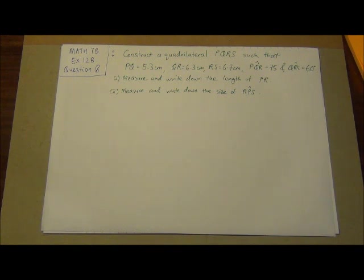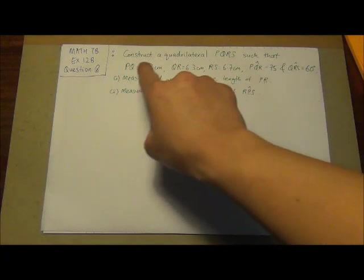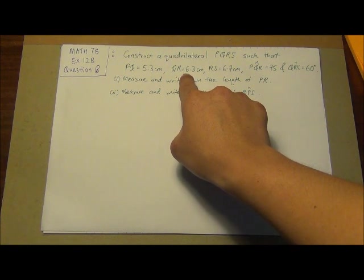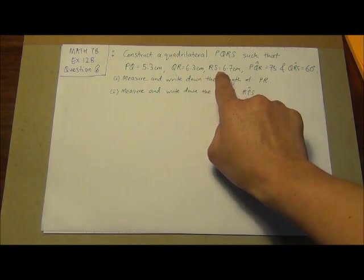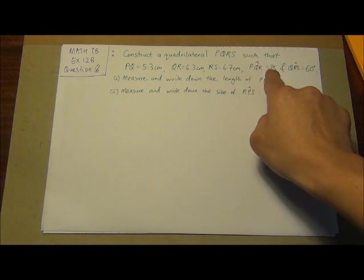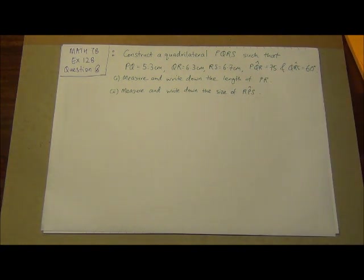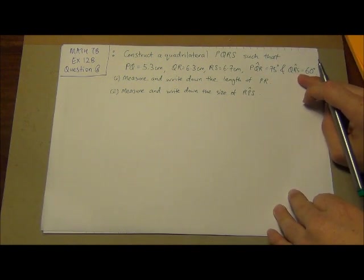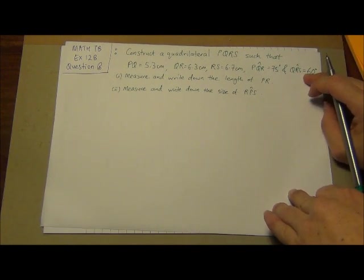In this question, construct a quadrilateral PQRS such that PQ equals 5.3 cm, QR equals 6.3 cm, RS is equal to 6.7 cm, angle PQR equals 35 degrees, and angle QRS is equal to 60 degrees.